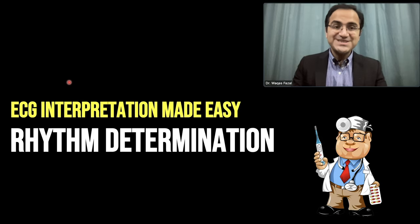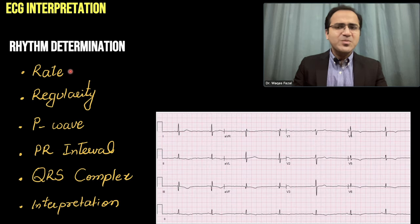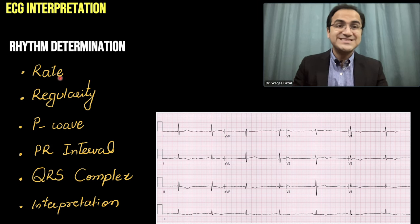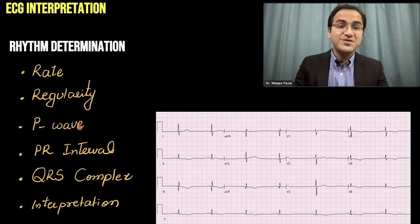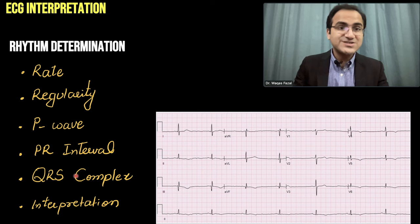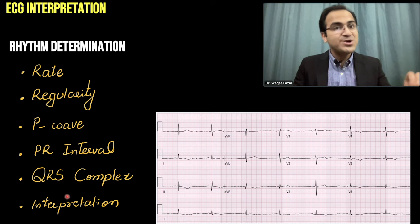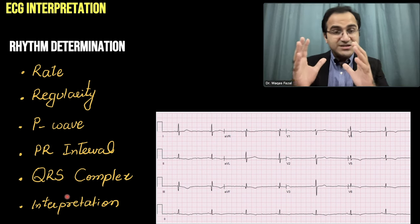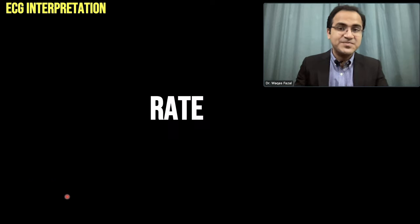In our ECG interpretation made easy video series, this video covers rhythm determination. There are a few key things to assess: calculate the rate (tachycardia or bradycardia), check regularity (regular or irregular), examine the P wave (present and normal or not), check the PR interval (prolonged or not), assess the QRS complex (narrow or wide), and then write down your interpretation.